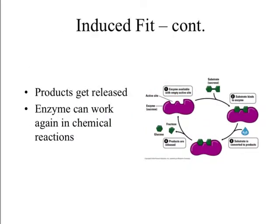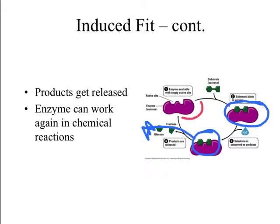Once the substrates are nicely fit into the enzyme, the chemical reaction takes place. The enzyme cracks or breaks that chemical bond in order for the chemical reaction to occur — it gives it the energy. The substrate is converted to products, those products are spit out and released, and the enzyme is now free to do the whole process over again. Enzymes, just like ATP, are definitely renewable.